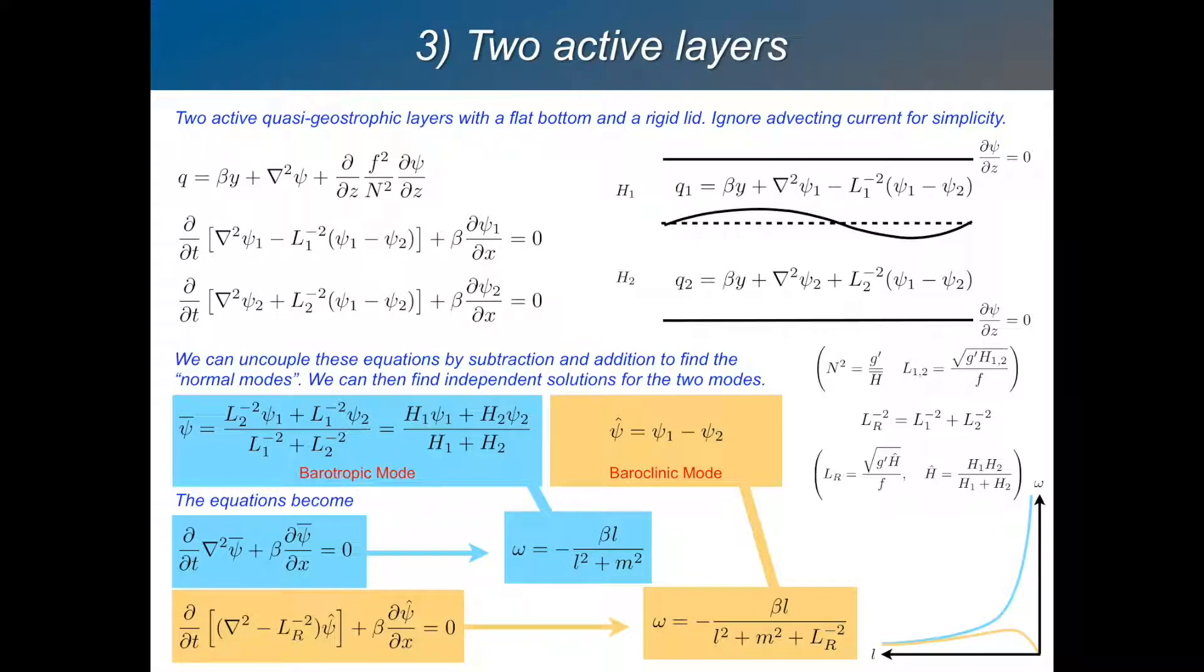And so in layer one and in layer two we have to define the potential vorticity. As I said before we can define it in terms of vertical gradients of the stream function. So you discretize this term in the equation and you get these terms where it depends just on the difference between the stream function between the two layers.